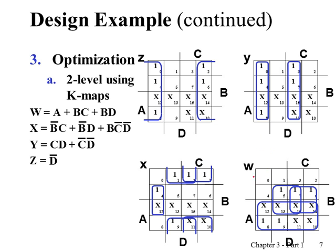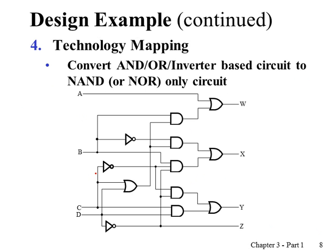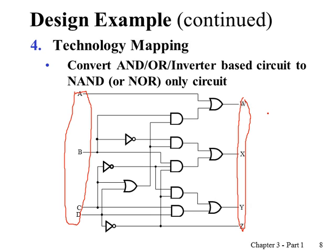Based on this truth table we construct K-maps for W, X, Y, and Z, with those six don't care conditions in each K-map. Using the K-maps, finding prime implicants and essential prime implicants, we derive simplified equations for each output. Once the simplified equations are given, we draw the circuit based on AND, OR, and inverters, with four inputs A, B, C, D and four outputs W, X, Y, Z representing the Excess-3 code.